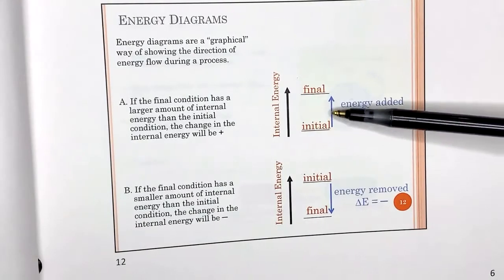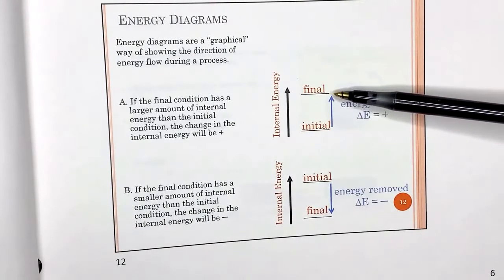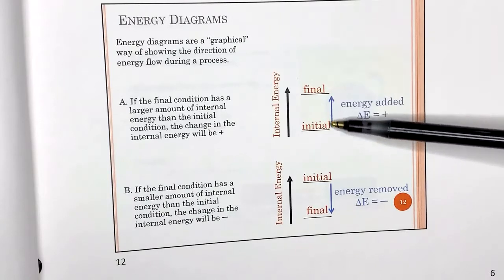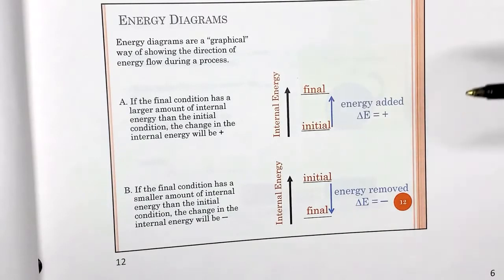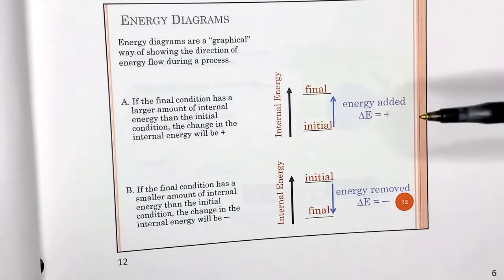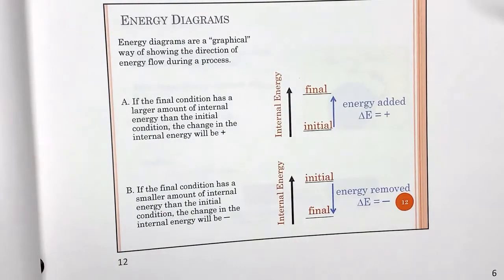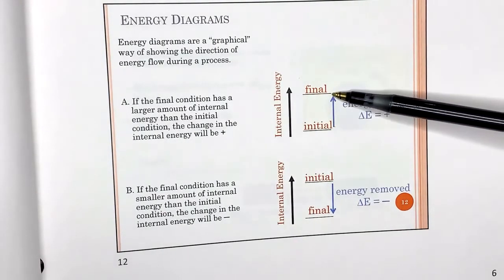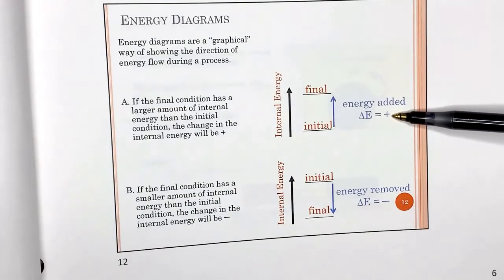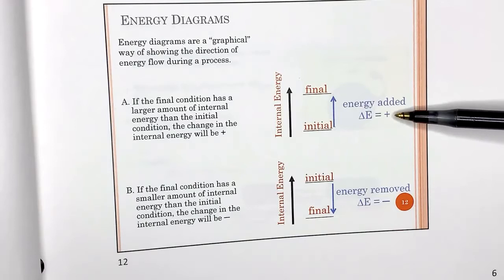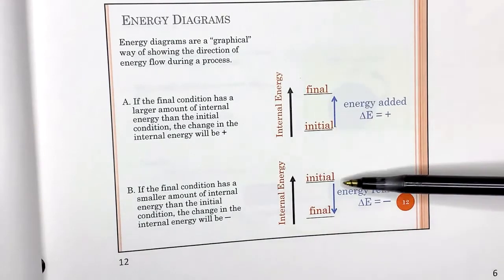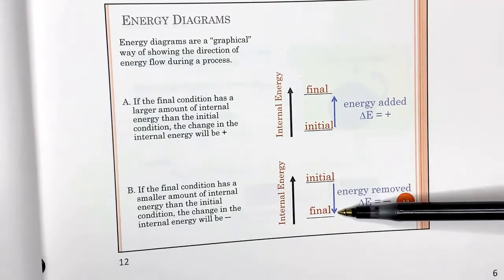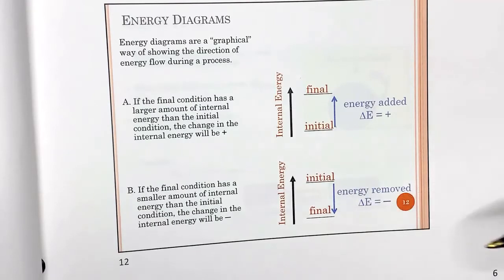Think of it like a bank account: when your balance goes up, it shows a positive sign — energy has been added. When the balance comes down, initial is high and final is low, you show a negative sign because money was removed from your account.